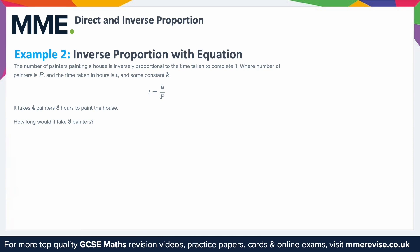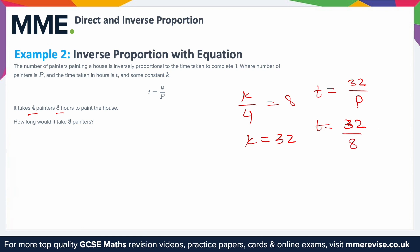There are two different approaches; I'll show you both. The first is to substitute in the values we know and find the constant. So P is 4, giving K over 4, and we know that takes 8 hours. So K over 4 equals 8. Solving for K by multiplying by 4, we get K equals 32. So you can rewrite the equation as T equals 32 over P. For 8 painters, T equals 32 over 8, and 32 divided by 8 is 4 — so it would take 4 hours.